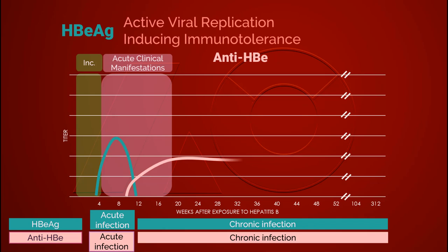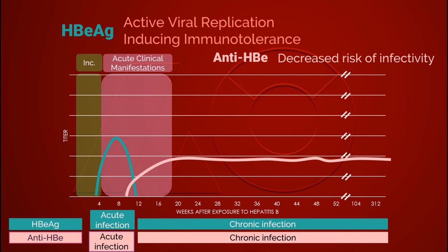Hepatitis B e antibodies quickly follow the transient presence of hepatitis B e antigen during an acute infection. In chronic infection, these antibodies may persist and be detected. Hepatitis B e antibodies are related to a decreased ability to cause infection.